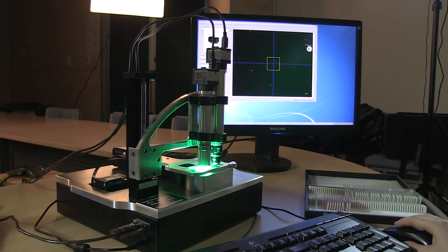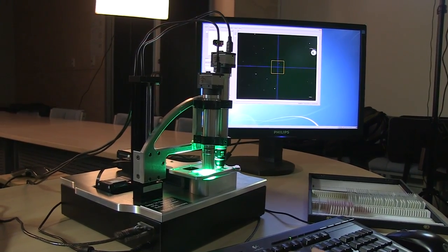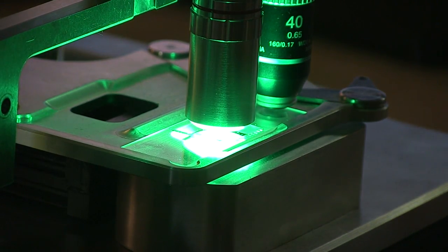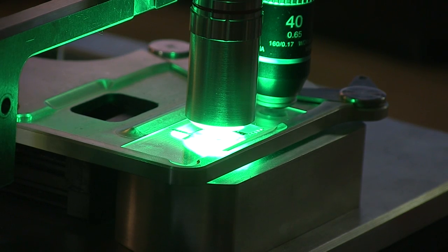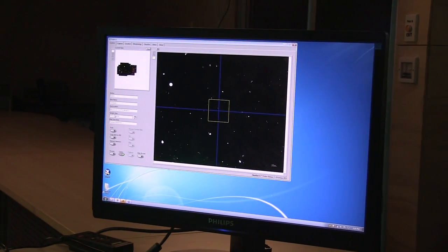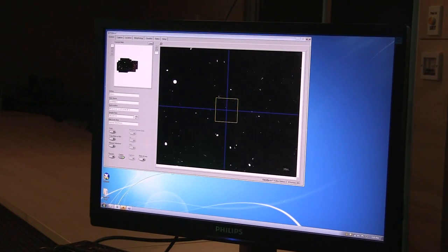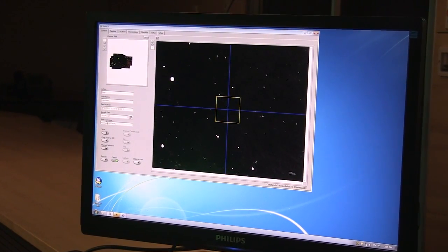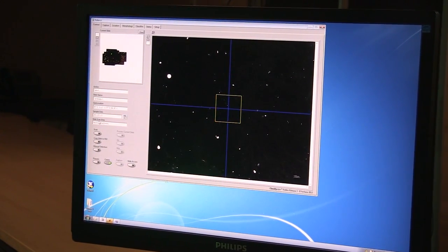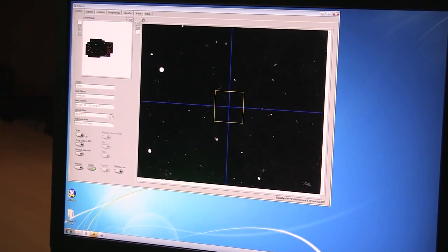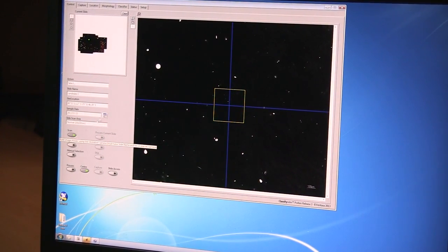We can then give this slide a name and so we can add the geolocation information so that the site where the sample was collected from, and we also add a date which the sample was collected, and this information that we enter here is tagged on to every single image file that is collected from this slide.